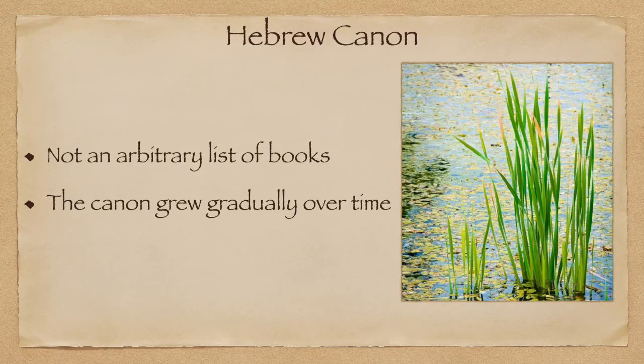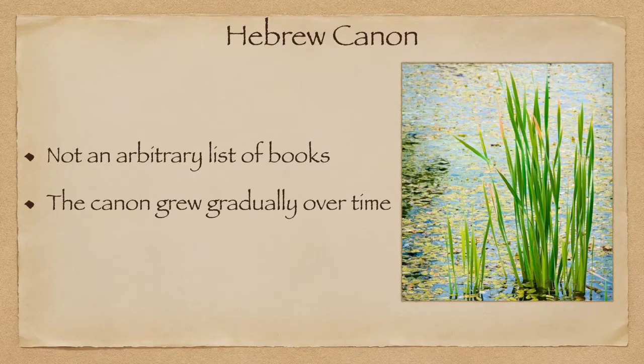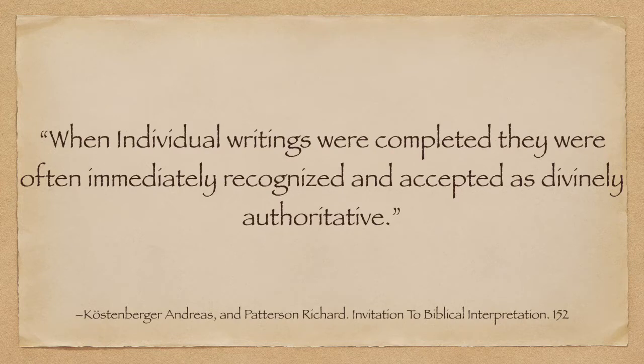These are not just arbitrary lists of books. The canon grew gradually over time. Scholar Andreas Köstenberger says that when individual writings were completed, they were often immediately recognized and accepted as divinely authoritative. We see this in Exodus 24:3-4 — Moses told the people all the Lord's words and laws, they responded with one voice, 'We will do everything the Lord has said,' and Moses wrote it all down. He said it, he wrote it down, it's authoritative.